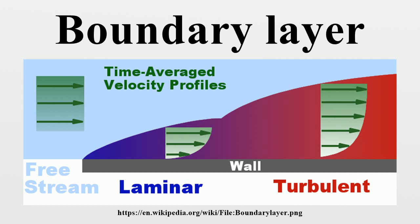Boundary layer flow over a wing surface begins as a smooth laminar flow. As the flow continues back from the leading edge, the laminar boundary layer increases in thickness. At some distance back from the leading edge, the smooth laminar flow breaks down and transitions to a turbulent flow. From a drag standpoint, it is advisable to have the transition from laminar to turbulent flow as far aft on the wing as possible, or have a large amount of the wing surface within the laminar portion of the boundary layer. However, the low-energy laminar flow tends to break down more suddenly than the turbulent layer.